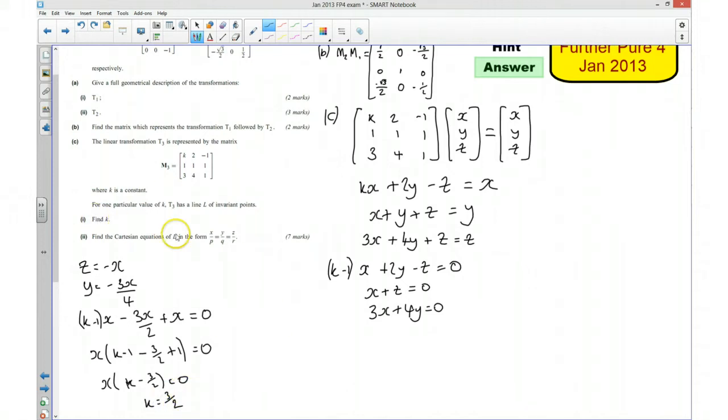And there you go. So we've done the first part here, we've found the value of k. For the next part, we're asked to find the Cartesian equation of L in this form here. Okay, so I already know that x is going to be equal to negative z, and I also can get from here that x is going to be equal to negative 4y over 3.